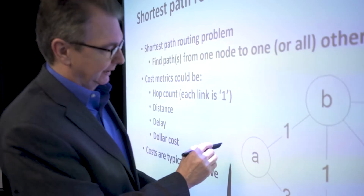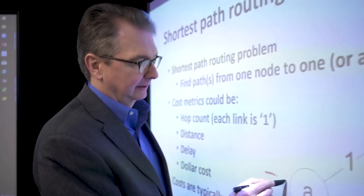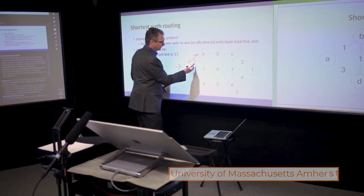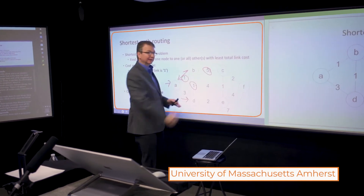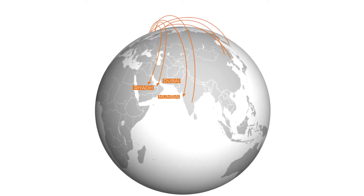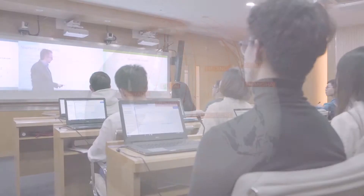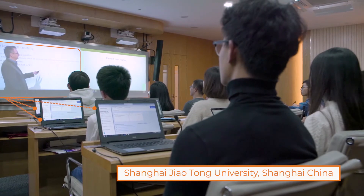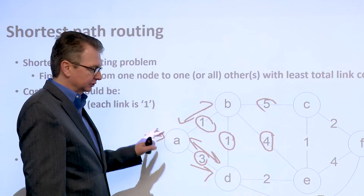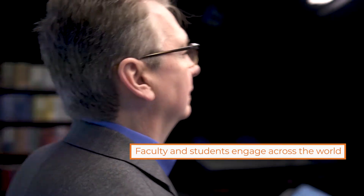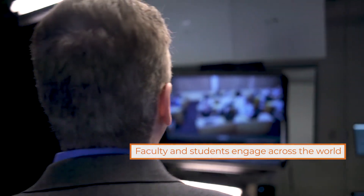This is an illustration of a network graph. Live classes — even though the instructor is in the U.S. and the students are halfway around the world — students speak and are spoken to. Can somebody tell me what a cost might be to get from one... Anyone? Delay. Delay is a great example.